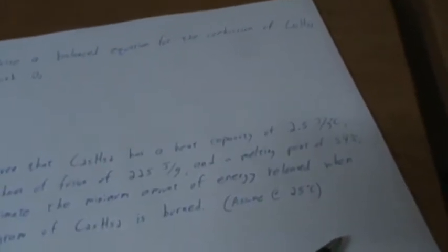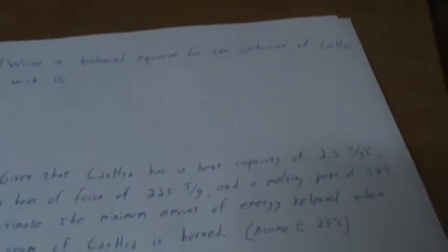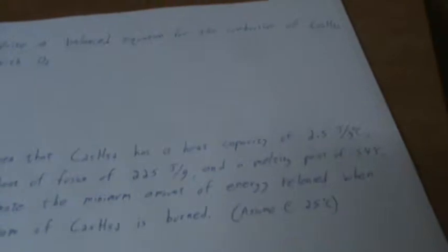Candles once lit are self-sustaining. Candle wax is a mixture of several molecules, but assuming it's C25H52. The way a candle works is that energy from the flame first warms and then melts some of the wax. Liquid wax then flows up the wick via capillary action, providing more fuel for the flame. Because candles burn for as long as there is still wax, we know that the energy released by burning C25H52 must be greater than the energy needed to first heat and then melt C25H52. Part A: write a balanced equation for the combustion of C25H52 with O2.